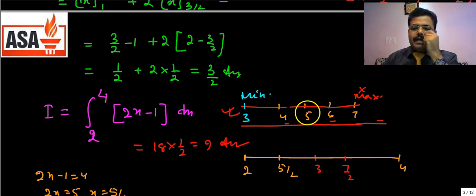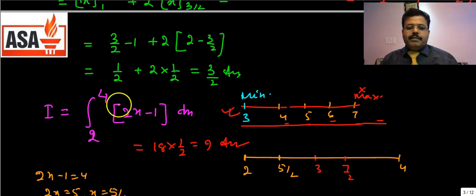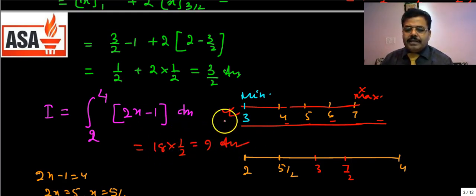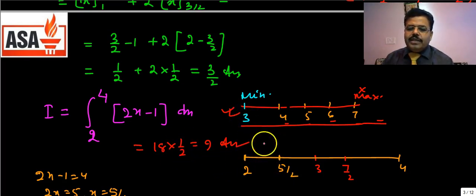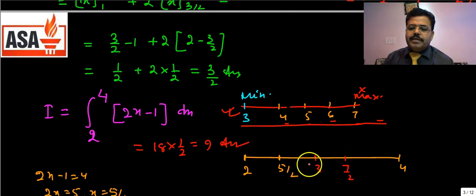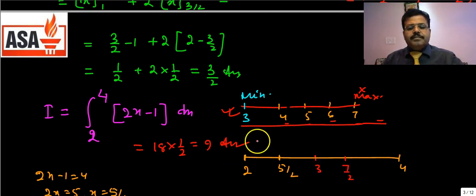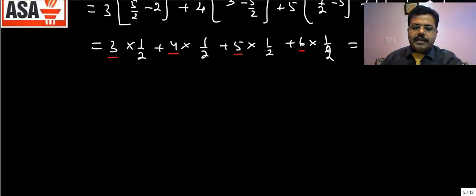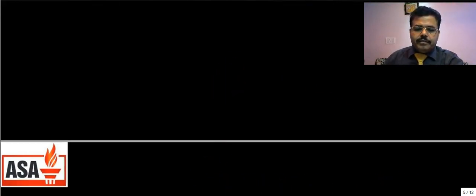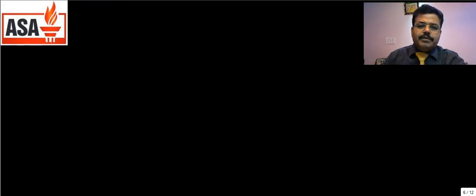So you need to be careful: you must always find the minimum and maximum values of the function. Then reject the maximum value, sum the remaining integer values, and multiply by the common difference of the limits — provided the differences are equal for each sub-interval. If the differences are not equal, then you write it as: value₁×(limit difference₁) + value₂×(limit difference₂) + value₃×(limit difference₃) and so on.